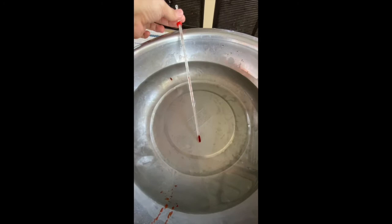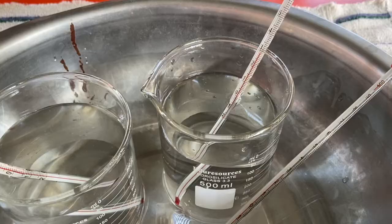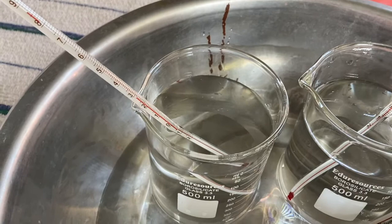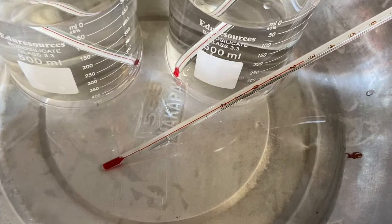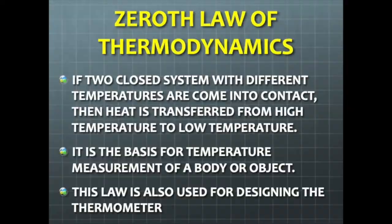Leave the setup for 40 minutes at room temperature. After that, check the temperatures again. The final readings were: object A at 28°C, object B at 28°C, and object C at 28°C — which means they have reached thermal equilibrium. This proves that if object A (the beaker with cold water) is in thermal equilibrium with object B (the basin with tap water), and object B is in thermal equilibrium with object C (the beaker with hot water), then object A and object C are in thermal equilibrium with each other.